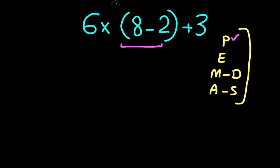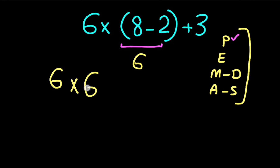We have to start with the parentheses: 8 minus 2 gives us 6. Let's rewrite the expression as 6 times 6 plus 3. In the next step we have one multiplication and one addition.